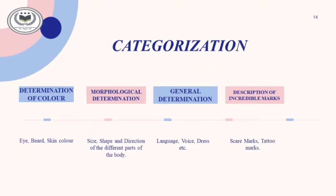When it comes to categorization, Bertillon's Portrait Parley was originally divided into four categories. First is the determination of color — used to determine the color of eye, hair, beard, and skin. Second is morphological determination — which includes the shape, size, and direction of different parts of the head and body. Third is general determination — which includes grade of soundness, carriage, voice, language, dress, and social standing. Last is the description of indelible marks — which includes scar marks or tattoo marks.